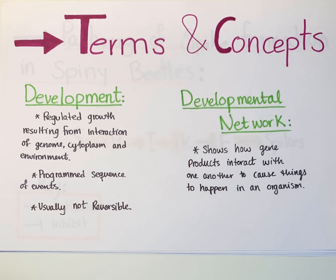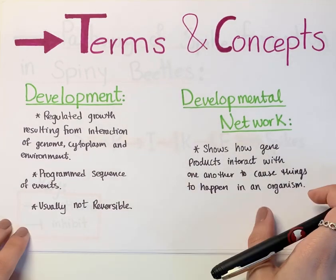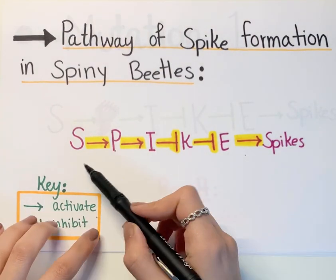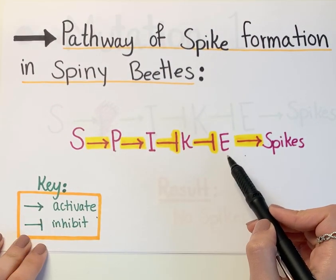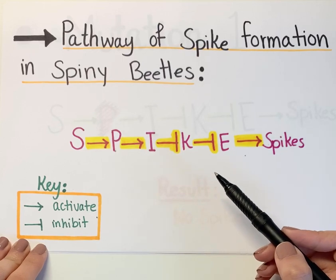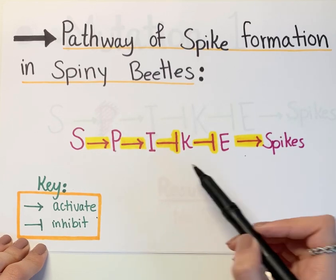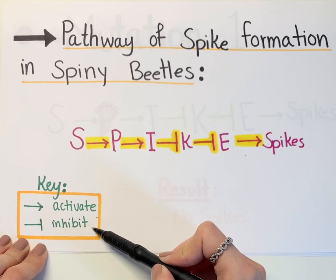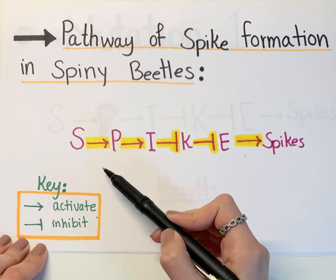To learn how to interpret a developmental network and the relations between each part, we will look at a spike-forming pathway in spiny beetles. The pathway is drawn out here. As depicted, using this key down here, we are able to read the pathway.